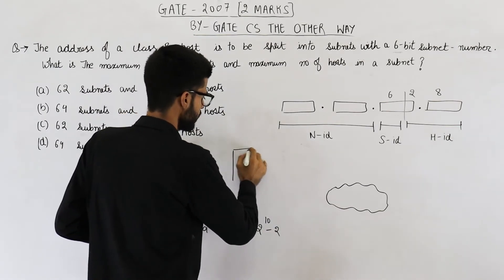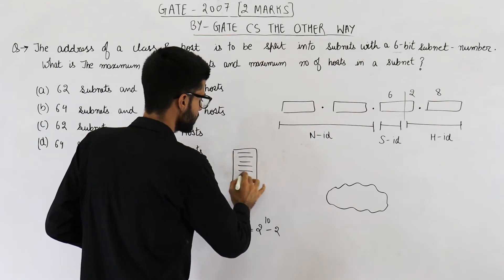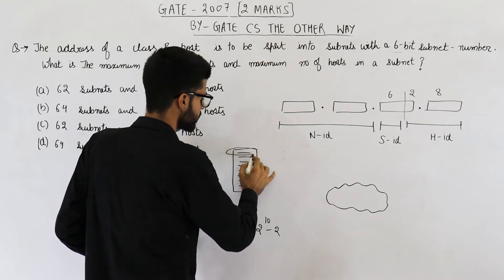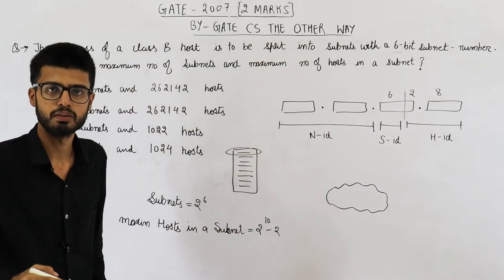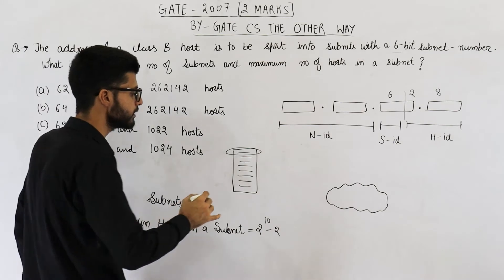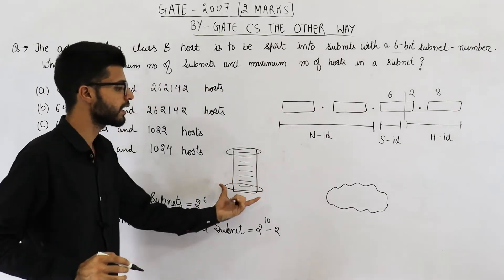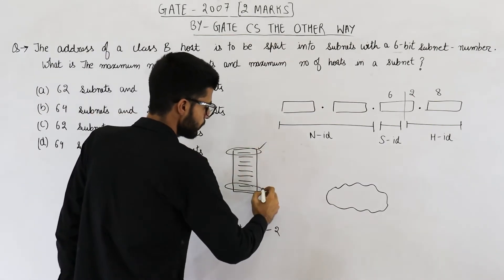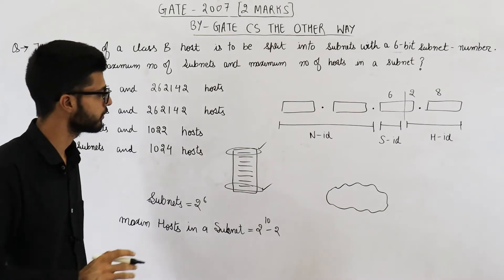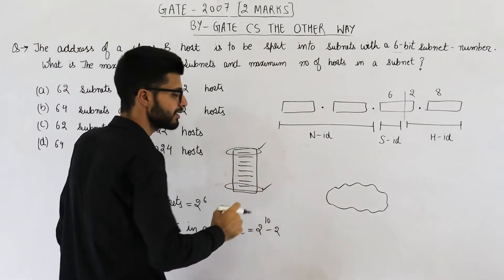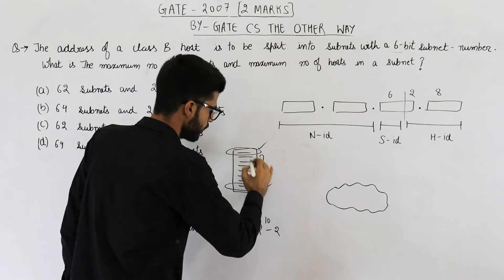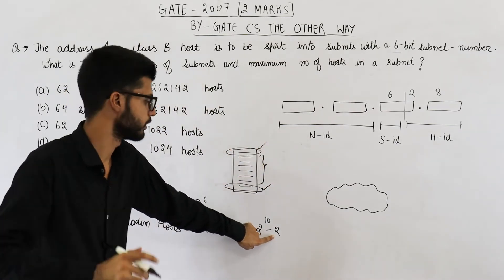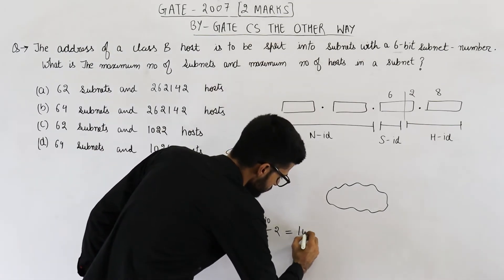So if this is a network, you have 2 raised to the power 10 IP addresses. But in every network, first IP address is reserved for the network ID of this network. As well as last IP address is also reserved to act as broadcast address for this network. So 1 plus 1, 2 IP addresses are wasted. We cannot assign these IP addresses to any host. So maximum, you can configure 2 raised to the power 10 minus 2 hosts only.